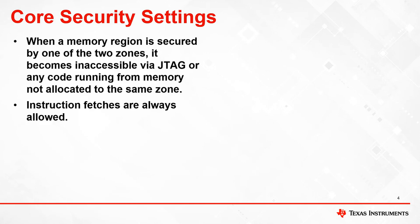While data reads and writes from an unauthorized source are blocked, instruction fetches are always allowed. This allows the owner of zone 1 to utilize functions programmed by the owner of zone 2 without compromising the code security of either zone.